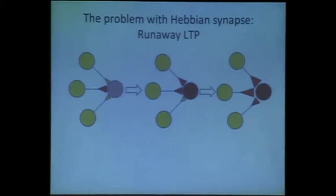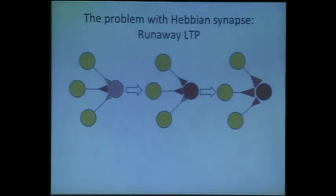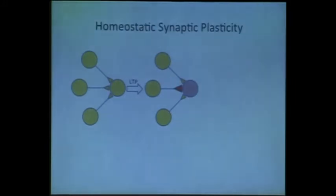The problem with synaptic strengthening is that it tends to create runaway plasticity. If you have a synapse that is strengthened, this increases the postsynaptic neural activity, which leads to erroneous coincidence firing between the two neurons, which leads to erroneous further strengthening of this synapse. This becomes a positive feedback cycle that could allow the brain to go into a seizure. But we all know that after learning, we don't go into a seizure. So what happens?